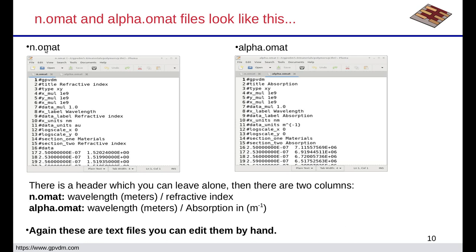Here's an example of n.gmat — it's effectively just a column of x and y data. Here is alpha.gmat — also just a column of x and y data. The n.gmat file has wavelengths in meters and refractive index. The alpha.gmat file has wavelength in meters against absorption in meters to the minus one. The key thing to remember is that these files contain only SI units: wavelength is in meters — not centimeters, not nanometers, not micrometers — it's in meters. Refractive index has no units, and absorption is in meters to the minus one. If you get those right, you can replace the x and y columns with whatever data you want.